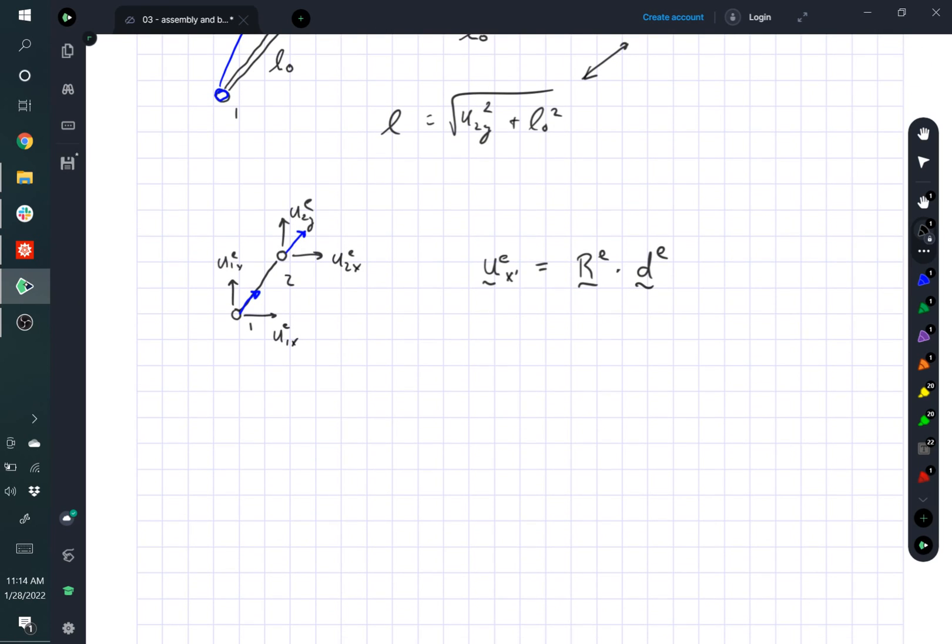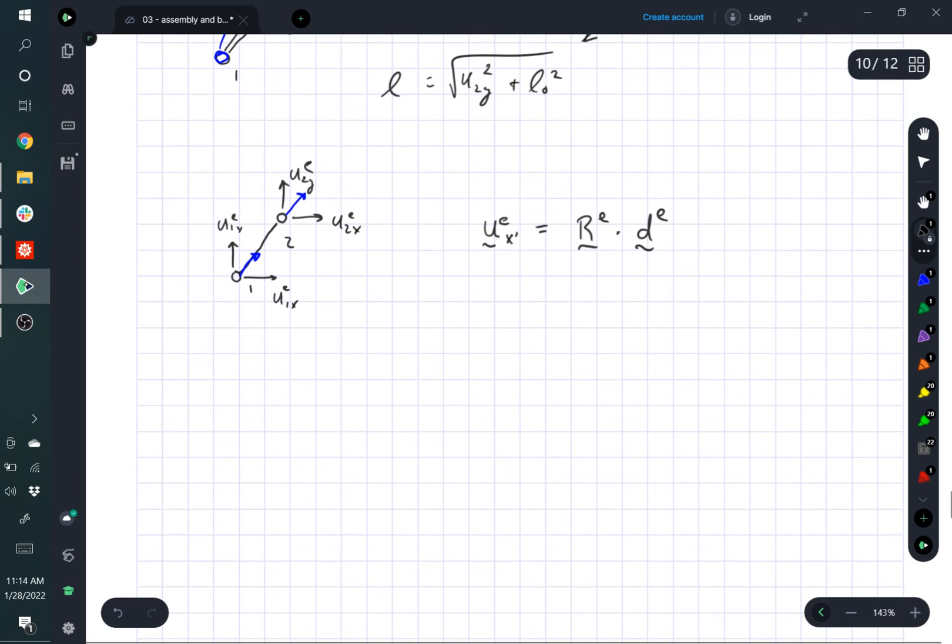what this is doing is it's taking the dot product of the displacements of each direction, of each node, with the direction of the element to calculate the projection of the displacement along the element direction. So how would we do that?